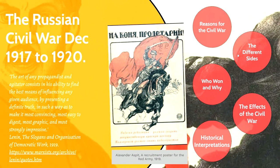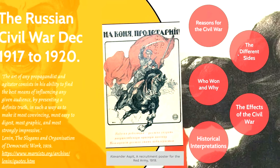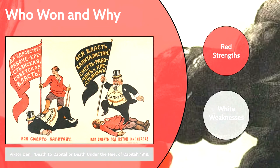Now we get to who won and why. The Reds won. Another Bolshevik poster shows a stark choice: on the left a worker crushed under the heel of capital, and the message is that there is no middle way — you either destroy capitalism or capitalism destroys you.